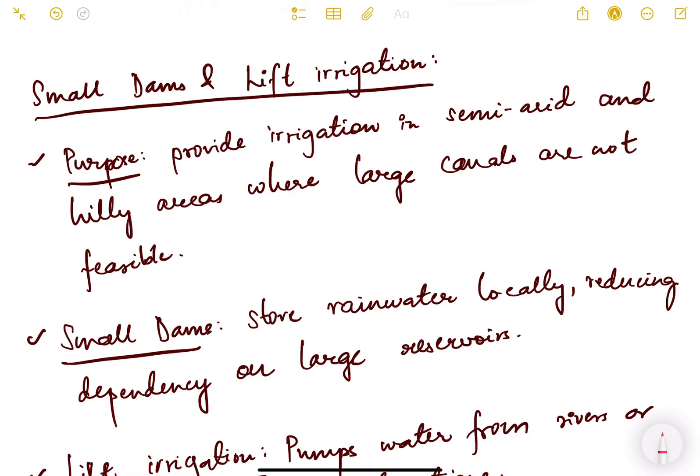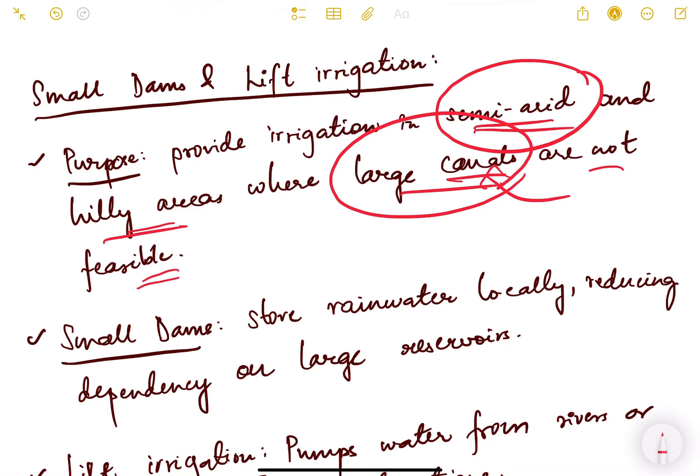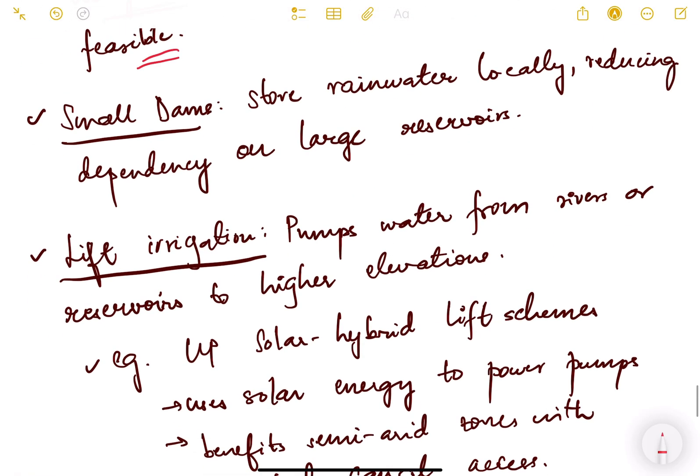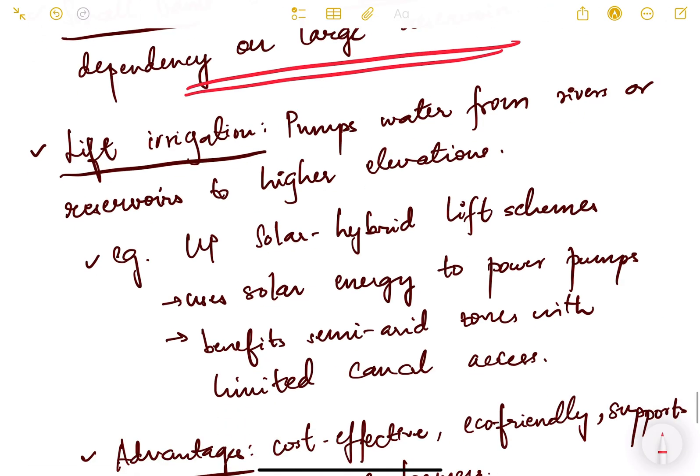The next one is small dams and lift irrigation. The purpose is to provide irrigation in semi-arid and hilly areas where large canals are not feasible. To have large canals and large dams, you need plain flat lands. But in hilly areas or semi-arid areas where there are no rivers, you cannot build large reservoirs. Small dams store rainwater locally, reducing dependency on large reservoirs.